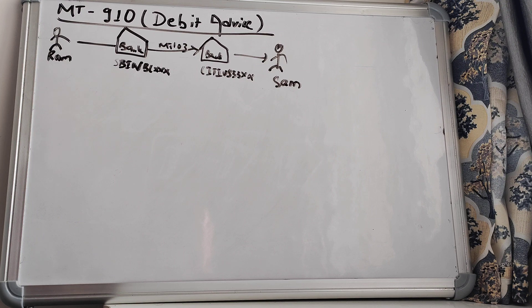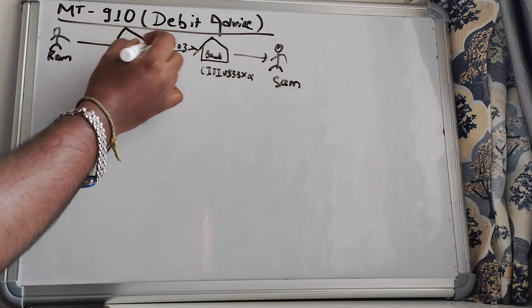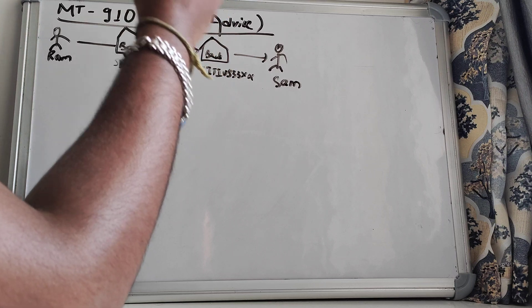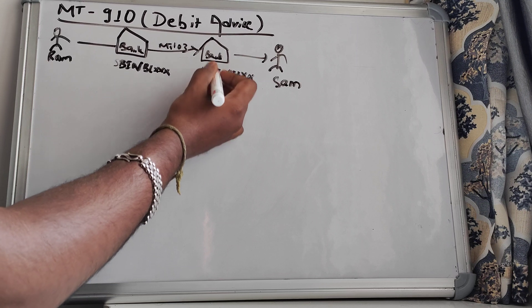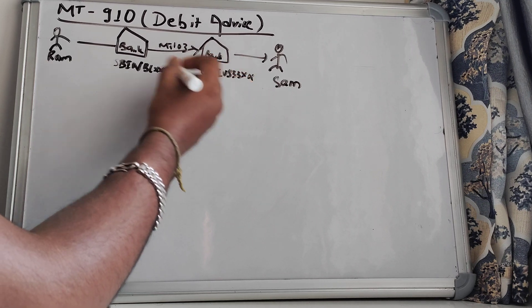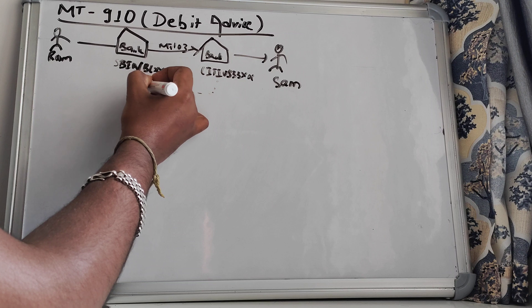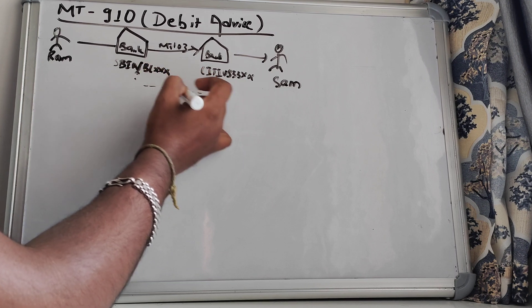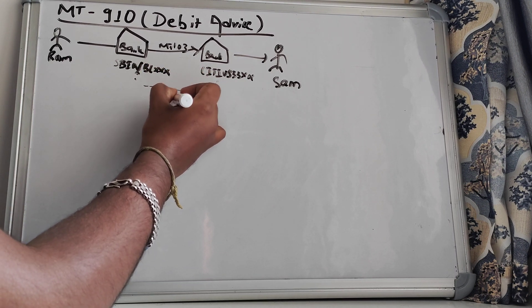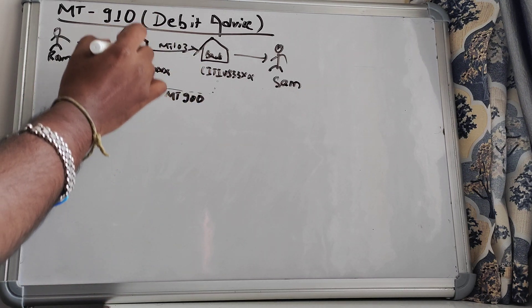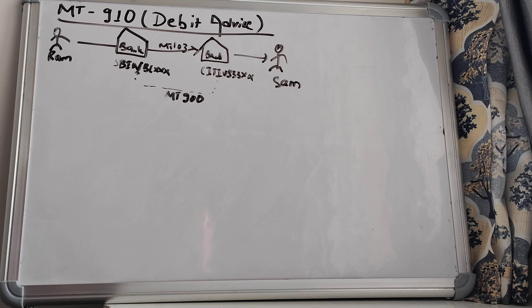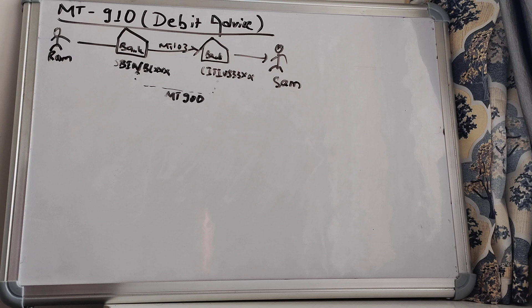All right, so in this example, one MT-103 message will be sent to bank City US 33XXX. And in return, when it will deduct the Nostro account of SBIN, it will send one confirmation saying MT-900. It will send MT-900 to Bank State Bank of India, which will inform State Bank of India saying that I have already deducted your Nostro account.